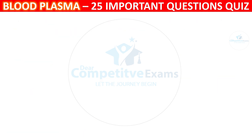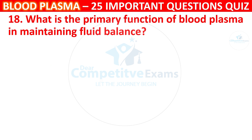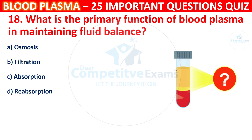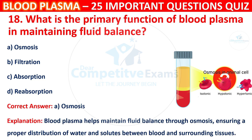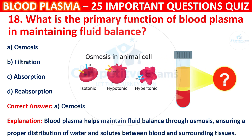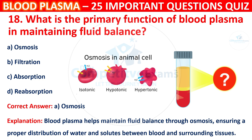Question 18: What is the primary function of blood plasma in maintaining fluid balance? Your options are Osmosis, Filtration, Absorption, or Reabsorption. The correct answer is A, i.e. Osmosis. Blood plasma helps to maintain fluid balance through osmosis, ensuring a proper distribution of water and solutes between blood and surrounding tissues.